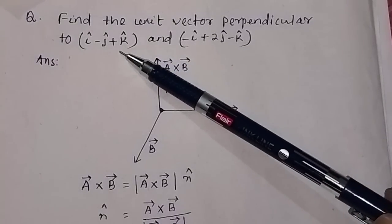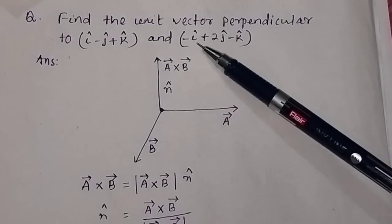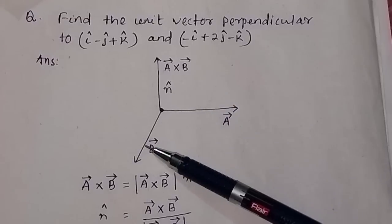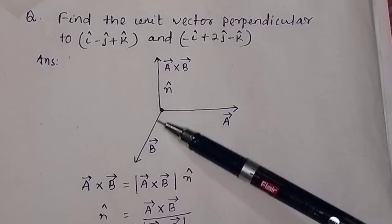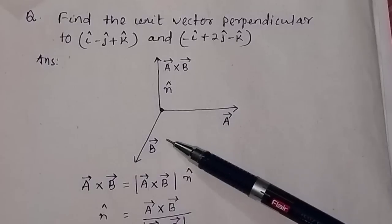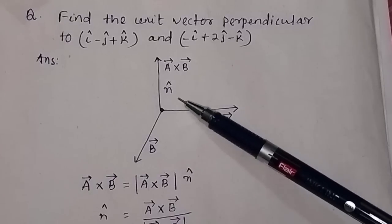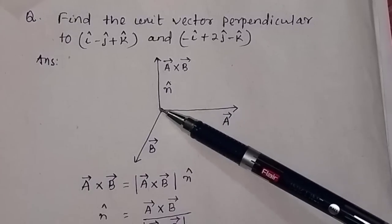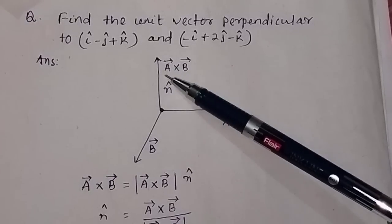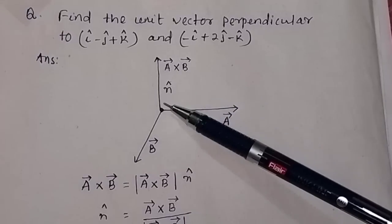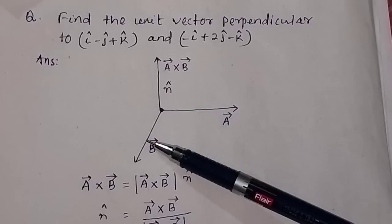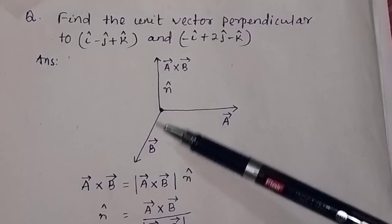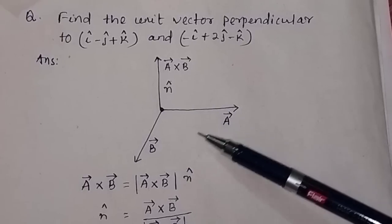Suppose this vector is a and this vector is b. Suppose these vectors are in the xy-plane — this is the x-axis, this is the y-axis, and this is the xy-plane. So the cross product of a and b will be along the z-axis. This cross product a×b gives the unit vector n-cap, which is perpendicular to both vector a and vector b. So we have to find out the cross product of a and b.